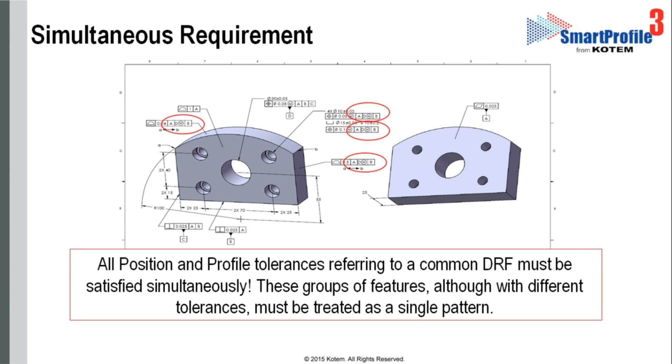For example, here we see several features whose feature control frames reference the same datums in the same order with the same modifiers. These features are considered as a composite pattern, whose tolerances must be met at the same time.